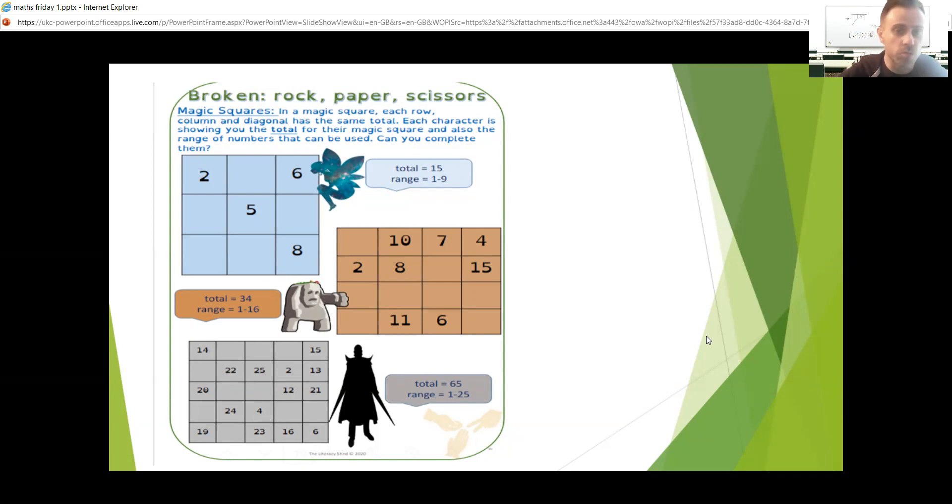Pretty straightforward. The next one is Rock, slightly bigger square. And he says this time your totals have to be 34. Okay, thanks for that, Rock. And you can only use the numbers 1 to 16 for this one.